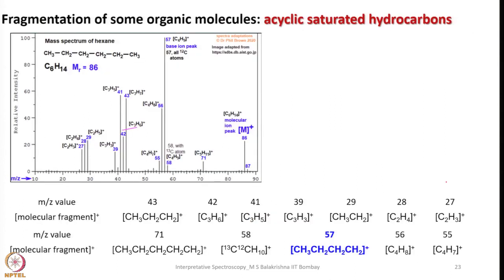Now let us look into some acyclic saturated hydrocarbons. For normal hexadecane, C6H40, you can see that losing one CH3 fragment gives C5H11, and then at mass 58 we have C4H9+. Peaks at 57 and 58 are also present.